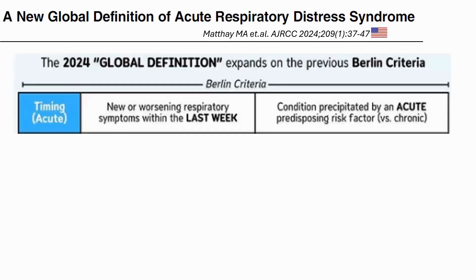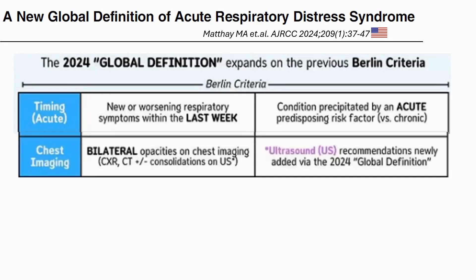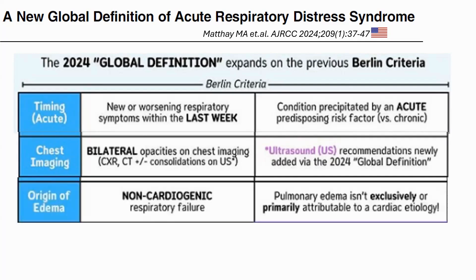Now looking at the global definition, there are three unique characteristics. The intent appears to be incorporating a large cohort of patients to do clinical studies and find better answers for customizing treatment. First, before they required an acute trigger; the newer definition says a background chronic disease with an acute trigger on top can still be called ARDS. Second, you can use ultrasound rather than CT chest or X-ray to categorize ARDS.